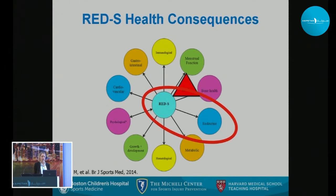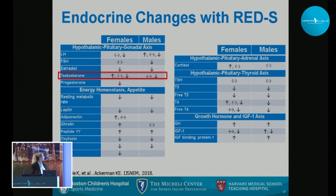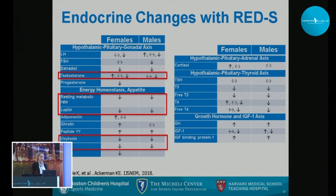Moving to other aspects of the endocrine system: a paper in IJSNEM last year explains what we know about endocrine changes in REDS. Testosterone is either normal or decreased in females and males with REDS. In both men and women, resting metabolic rate and leptin are down, oxytocin and insulin are down, and free T3 is down — these can be used as markers of the REDS syndrome.